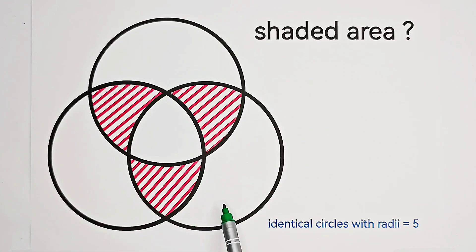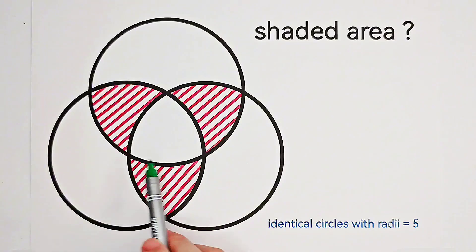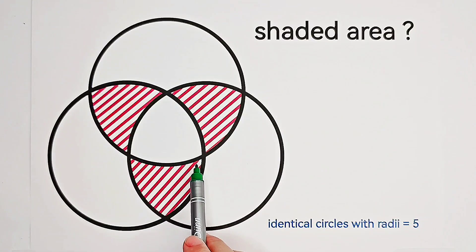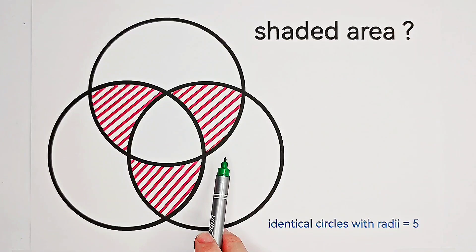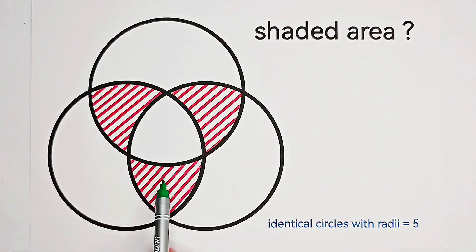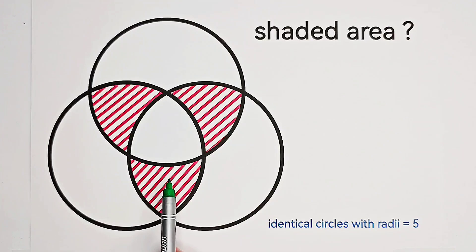Here are three identical circles, and their radii are all equal to 5. These three intersections are the three centers of these three circles. Now, we have to solve for the shaded area. How large is it?